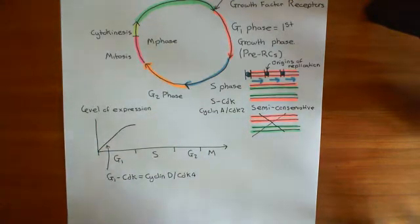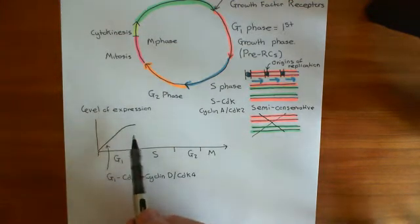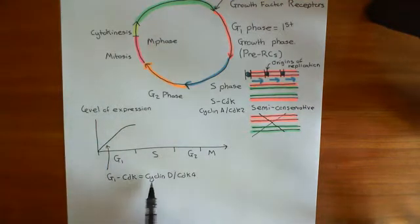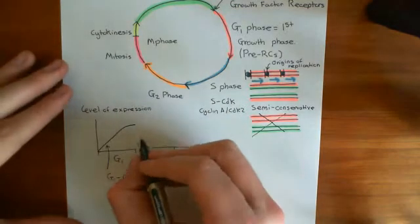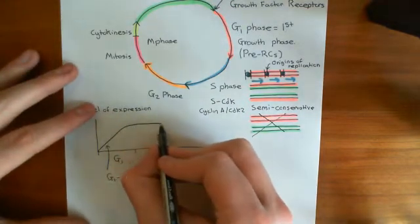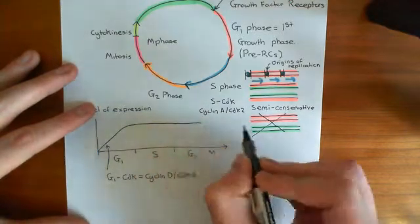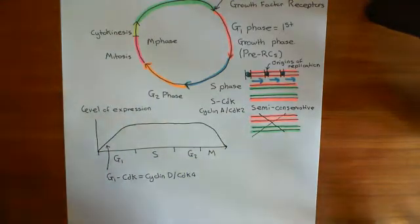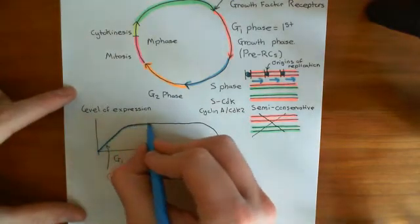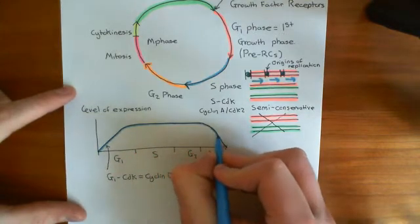As cyclin D-CDK4 concentration gets higher and higher towards the end of G1 phase, it starts phosphorylating the retinoblastoma protein, causing the release of the E2F transcription factors with their dimerization partner. The G1 CDK remains high throughout the cell cycle and then comes down at the end in M phase.